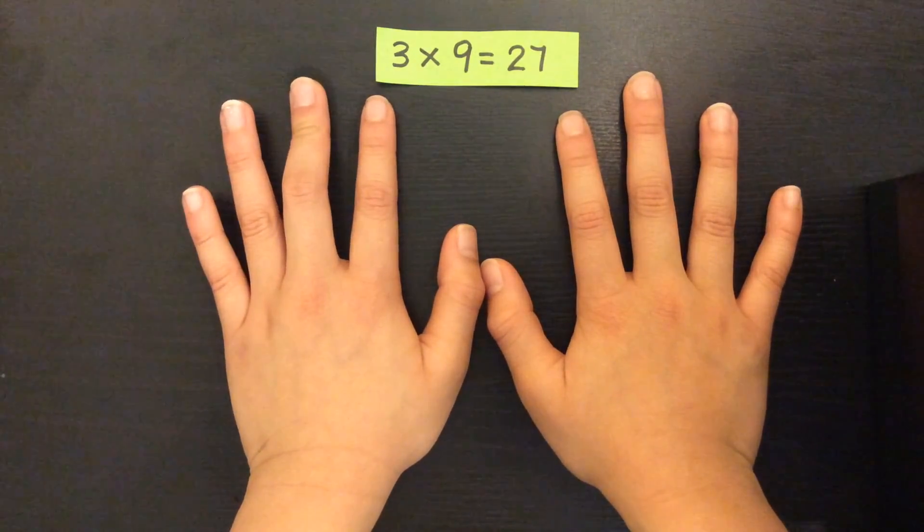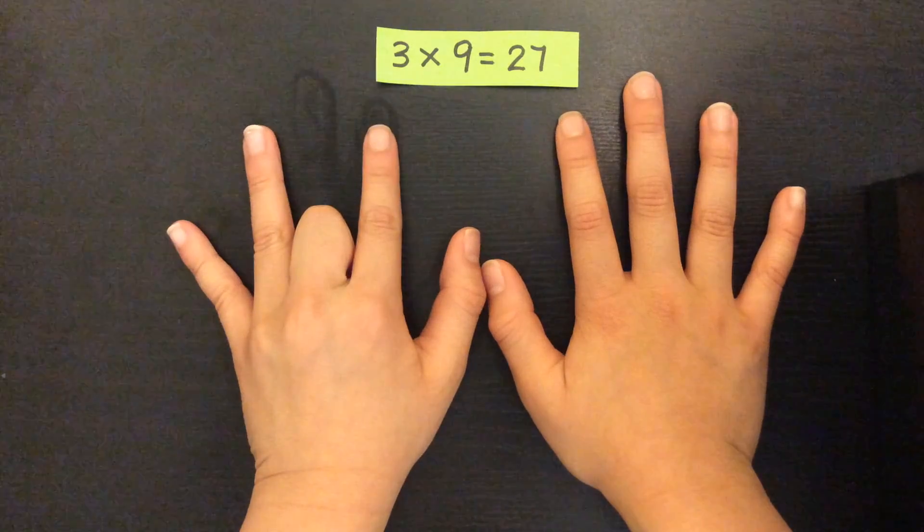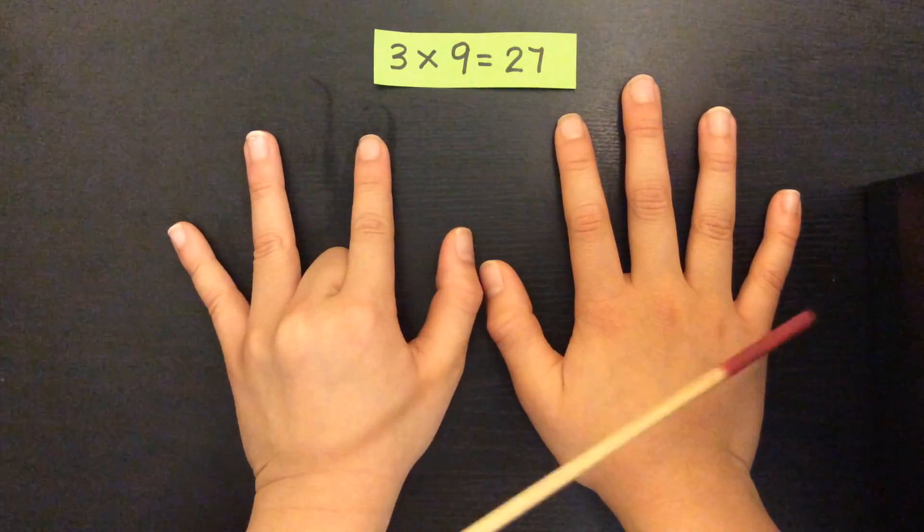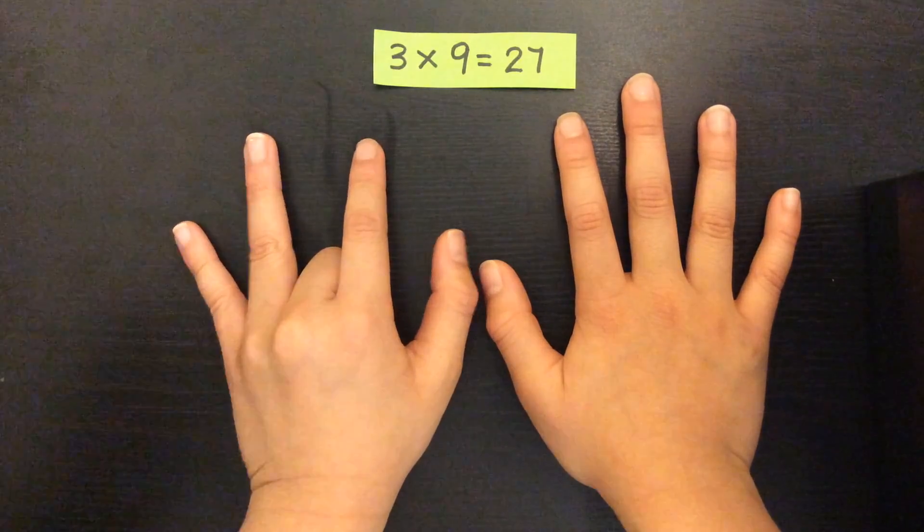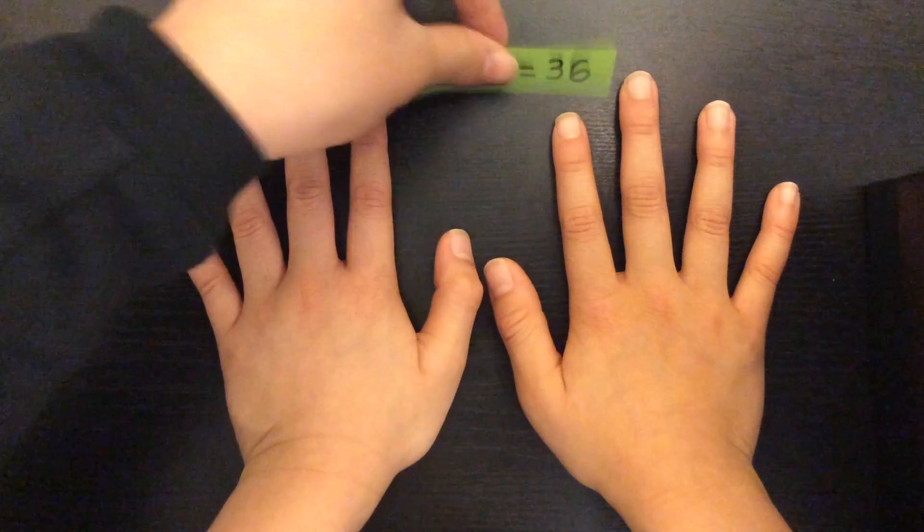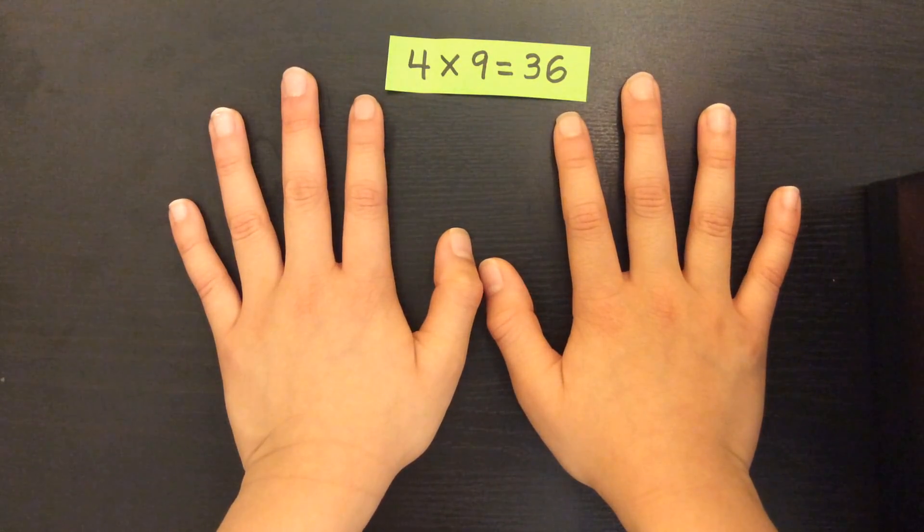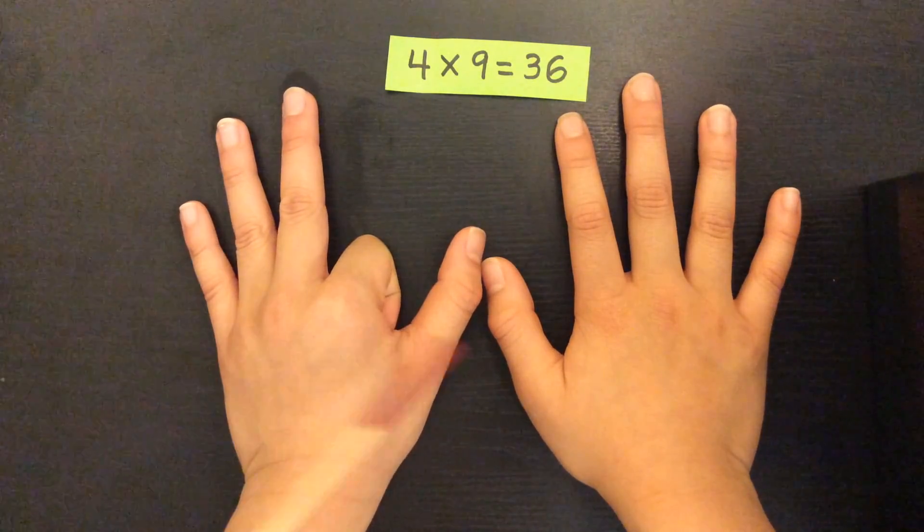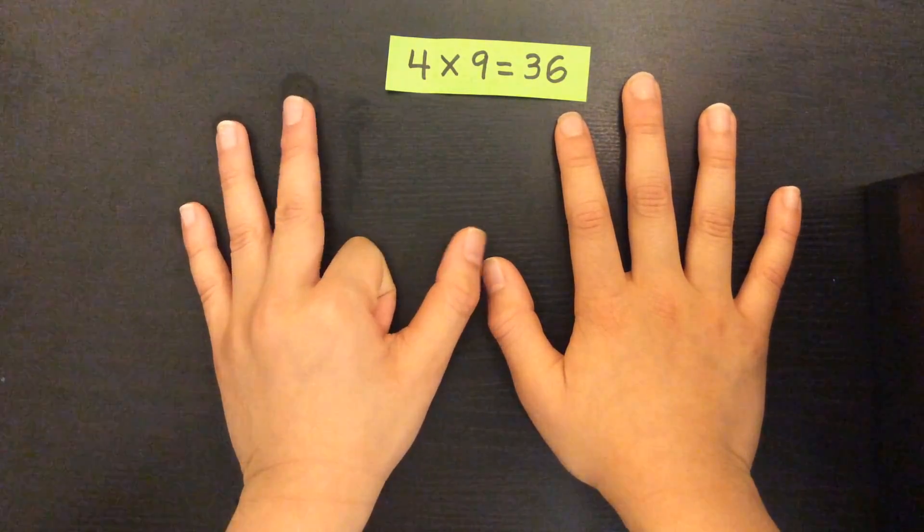Three times nine. Close third finger. I have two and seven. That's twenty-seven. Four times nine. I have three and six. That's thirty-six.